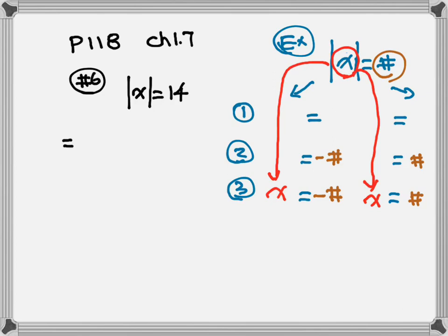Step one: I'm going to separate into two different equations. Step two: equation on the left equals a negative number — negative 14; equation on the right equals a positive number — positive 14. Step three: what's inside the absolute value always goes to the left-hand side of each equation. So x equals negative 14 and x equals positive 14.